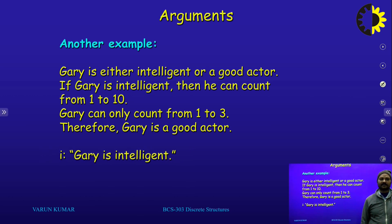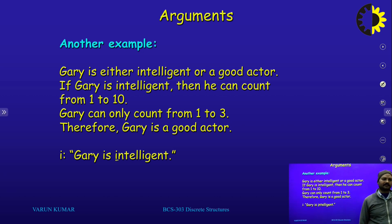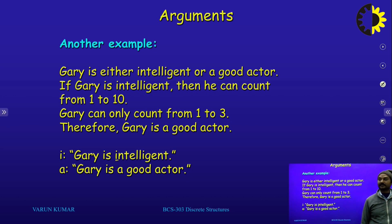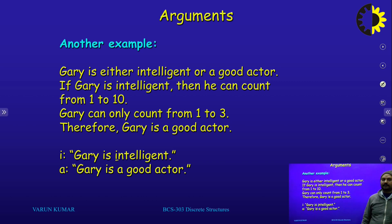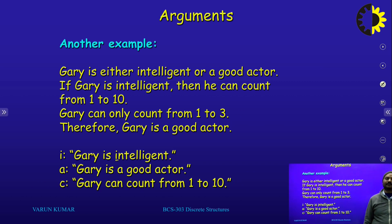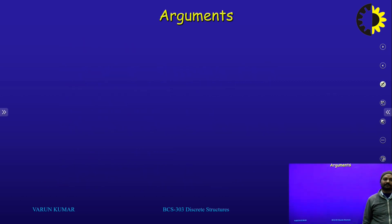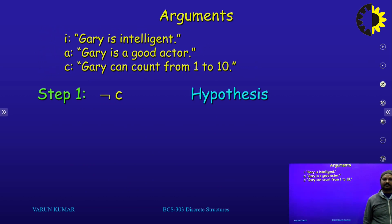Let I = Gary is intelligent, A = Gary is a good actor, C = Gary can count 1 to 10. If Gary is intelligent — that is I — then I implication C: he can count from 1 to 10.